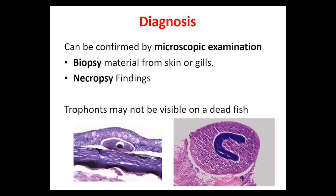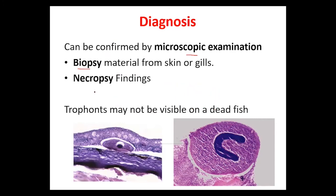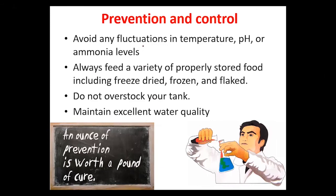For diagnosis, we can confirm this disease by microscopic examination — taking a biopsy from the skin or gills and observing under a microscope. We look for the trophont stage for identification. For dead fishes, we perform necropsy findings: we dissect the fish and identify the disease, since the trophont stage cannot be observed in dead fishes under the microscope.